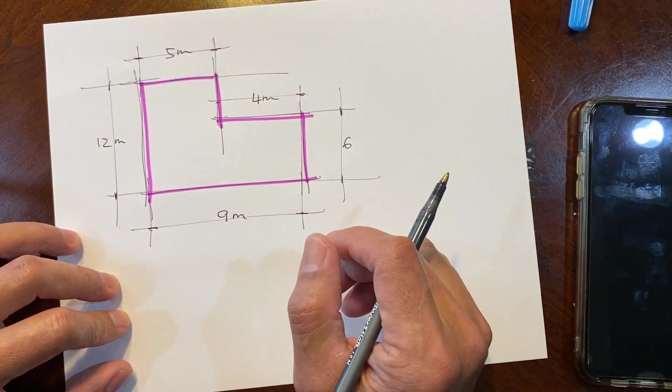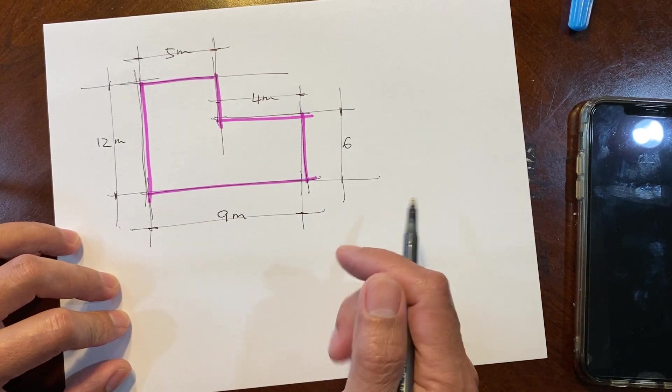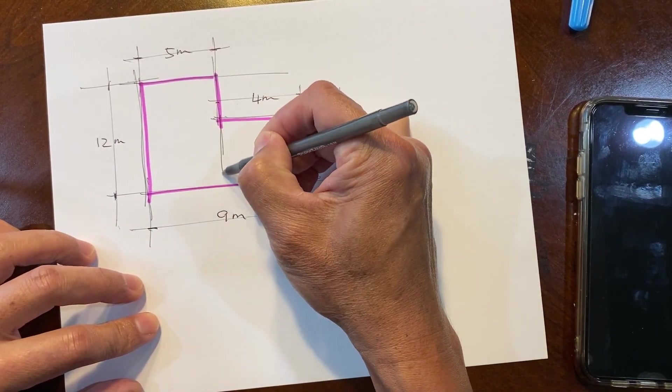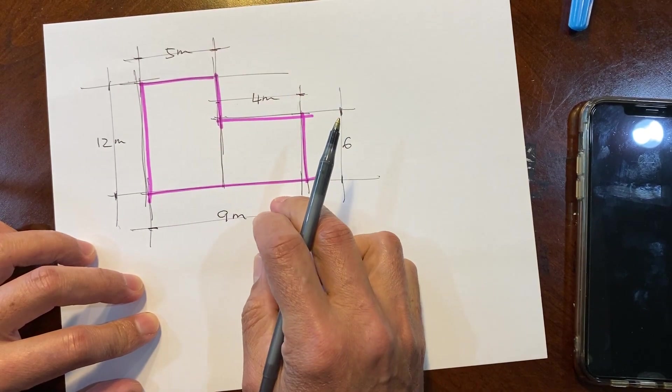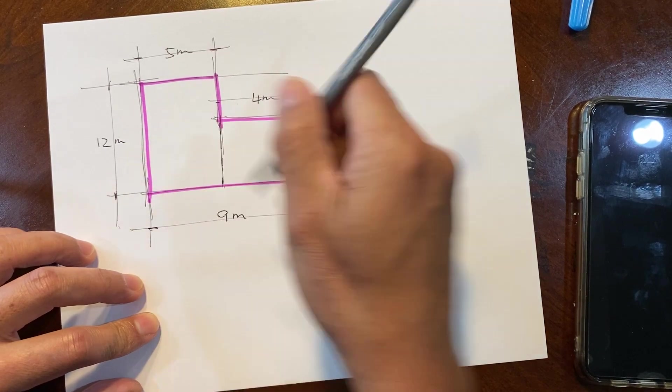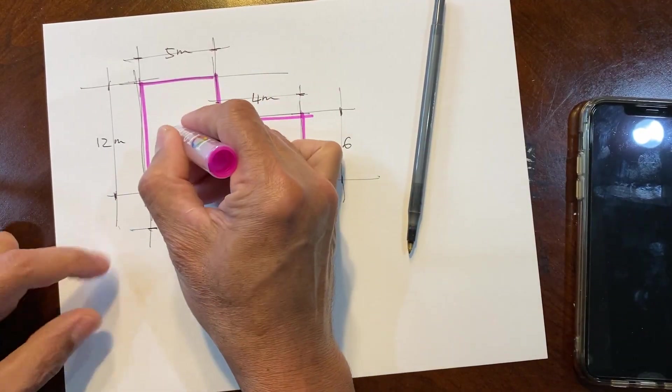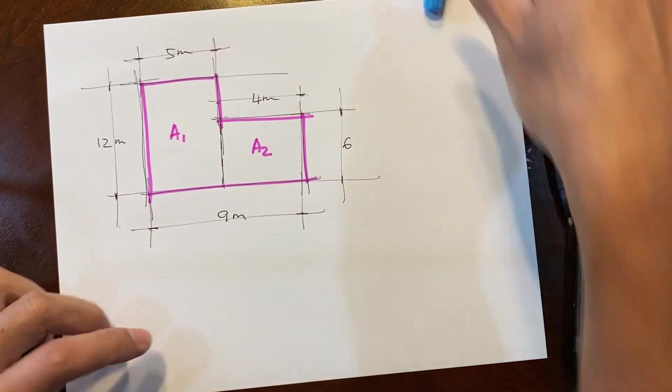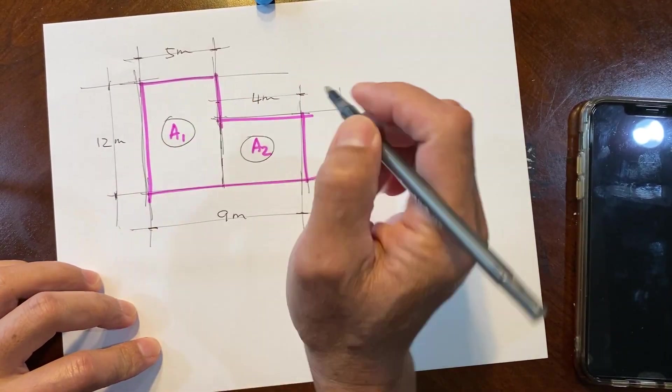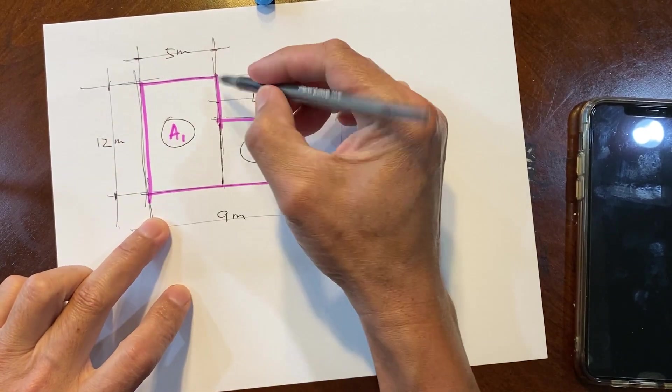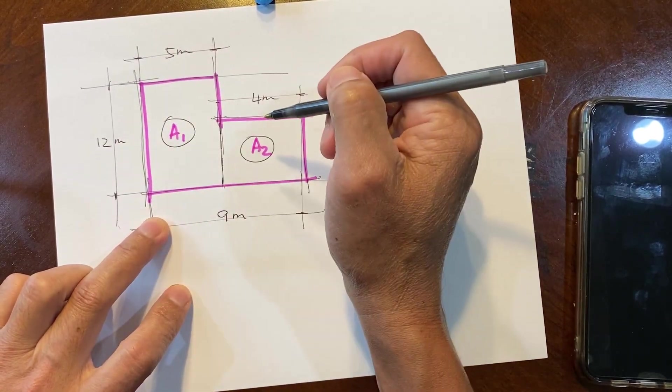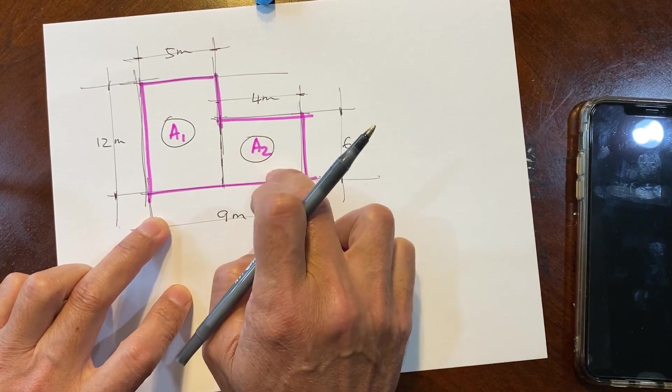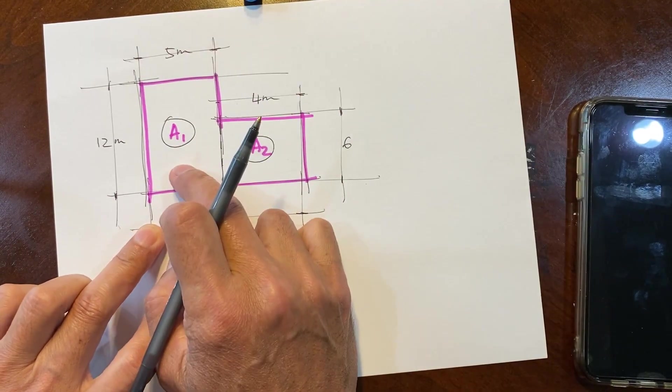What you gotta do is divide this into two lots. So we'll get two areas. What I'm gonna do is split it straight here. Let's call this Area 1 and this Area 2. By looking at Area 1, we see it is a rectangle, and also Area 2 is a rectangle. Let's get Area 1 first.